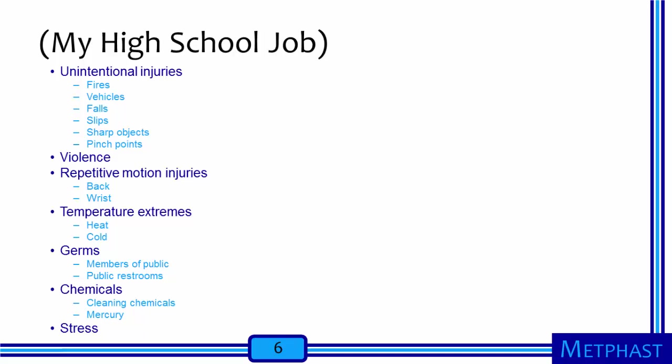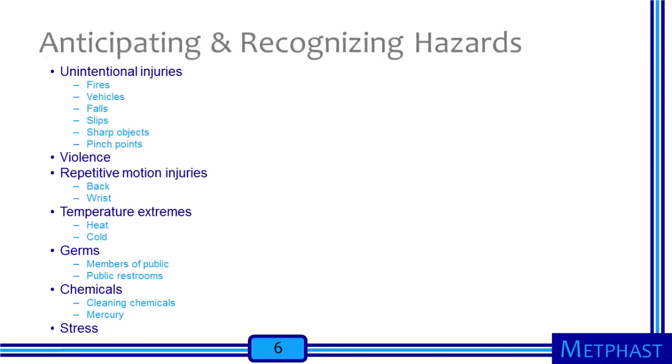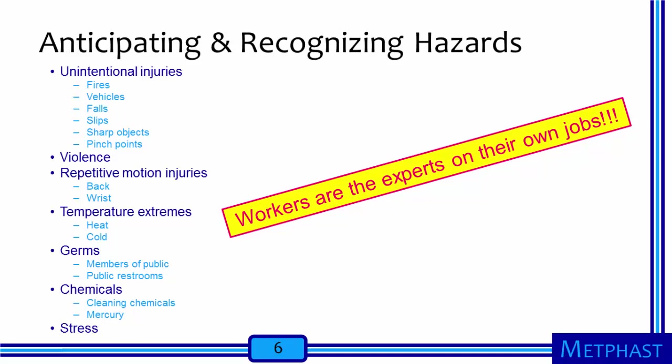There was a whole range of different hazards I was potentially exposed to in my workplace. Although you may have been able to anticipate that grocery workers face workplace hazards, most of you would not have been able to recognize all of these different hazards. This is an important point: when you are trying to anticipate and recognize hazards, you really need to get to know the job before you can be effective at analyzing the hazards. Ultimately, workers are the experts on their own jobs. If you are trying to understand where there is a potential for hazardous exposures, you need to talk to the workers.